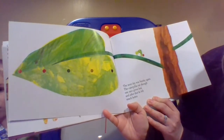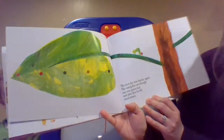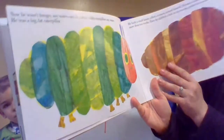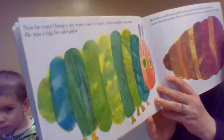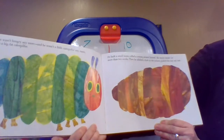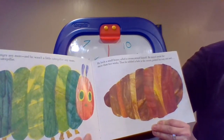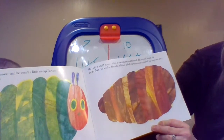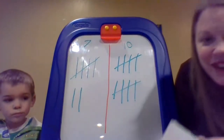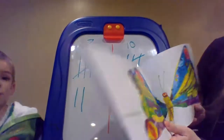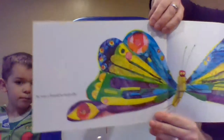On the next day, it was Sunday again. The caterpillar ate through one nice green leaf, and after that he felt much better. Now he wasn't hungry anymore, and he wasn't a little caterpillar anymore — he was a big, fat caterpillar. He built a small house called a cocoon around himself. He stayed inside for more than two weeks. Then he nibbled a hole into the cocoon, pushed his way out — and he was a beautiful butterfly.